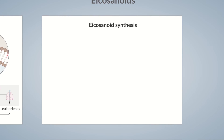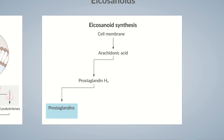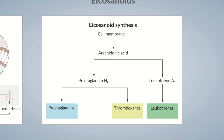Eicosanoid synthesis begins with fatty acids from the cell membrane. The most important of these fatty acids is arachidonic acid. On the one hand, prostaglandin H2 is synthesized from arachidonic acid, which is the starting point for the synthesis of other prostaglandins and thromboxins. On the other hand, arachidonic acid also gives rise to leukotriene A4, from which additional leukotrienes are formed.